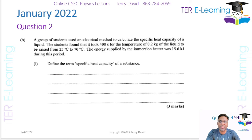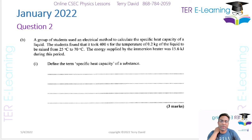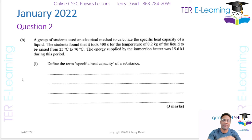The next part: a group of students used an electrical method to calculate the specific heat capacity of a liquid. The students found that it took 400 seconds for the temperature of 0.2 kilograms of the liquid to be raised from 25 to 70 degrees Celsius. The energy supplied by the immersion heater was 15.6 kilojoules during this period.